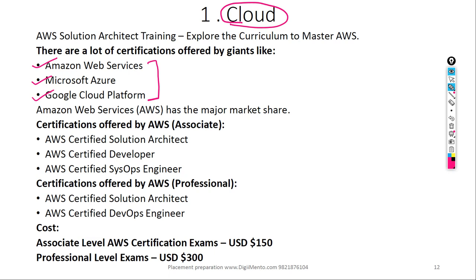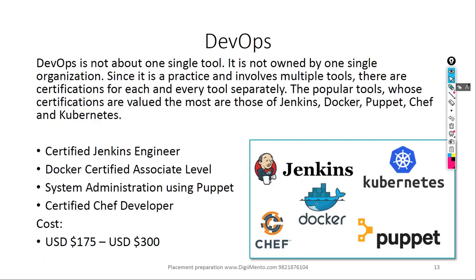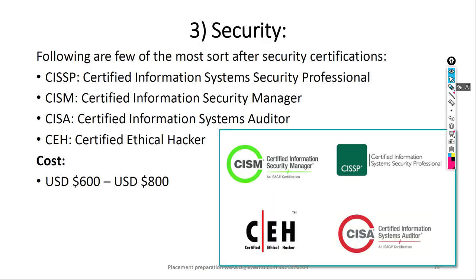The three giants providing cloud certifications are Amazon AWS, Microsoft, and Google Cloud. The first important one is the AWS Associate certification. I have already completed the AWS Certified Solutions Architect and AWS Certified Developer courses, so in our course I will cover the basics of AWS Certified Solutions Architect. Regarding DevOps — it is not just a single tool but a set of many tools. Since I have no DevOps certification, I will not cover DevOps right now, possibly later.